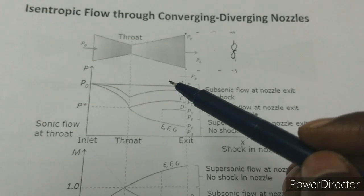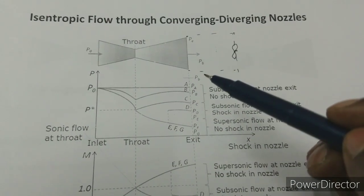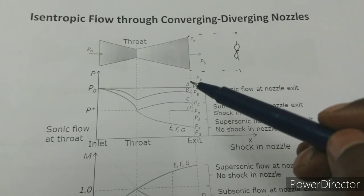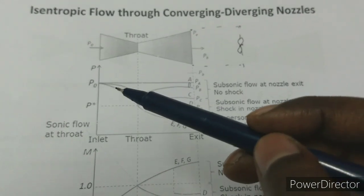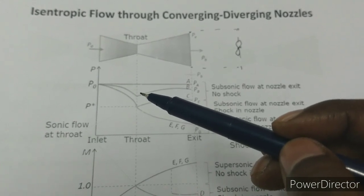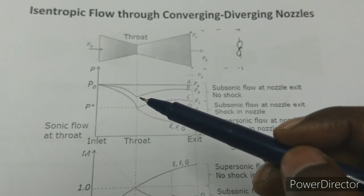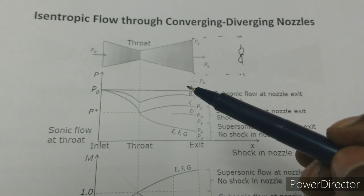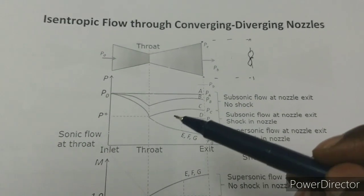Up to here, there is no difference — it will act as a subsonic nozzle only. If you reduce the back pressure further down, there will be higher acceleration. When you drop the back pressure, there will be an increase in velocity. In the convergent section, the same trend: flow will be accelerating till the throat section. If it is not reaching sonic flow condition, the flow is still in a subsonic region. Then the divergent section will act as a subsonic diffuser only, meaning there will be a pressure rise and drop in velocity. This trend continues until you reduce the back pressure to the critical pressure.